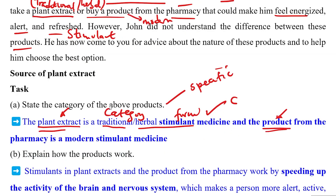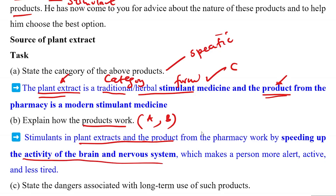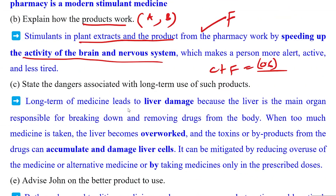Part B: Explain how the products work. Both are stimulants, so be very specific — stimulants in the plant extract and the product from the pharmacy. This specificity distinguishes an A learner from a B learner. Some learners put responses and get no scores. Stimulants work by speeding up the activity of the brain — that is their function and scores the function mark. Both category and function scores are attached together for an overall weight, though weights are susceptible to change and should be confirmed by the teacher.